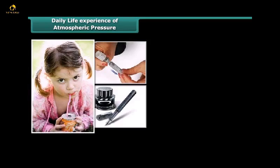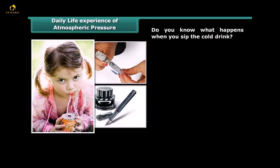Daily life experience of atmospheric pressure. In our day to day activities, we experience various instances of atmospheric pressure. Some common examples are sipping cold drink through a straw, dipping the nozzle of the syringe in the liquid, or filling of ink in fountain pens. Do you know what happens when you sip the cold drink? The air pressure inside the straw is reduced and the air pressure on the surface of the drink pushes the drink up into the straw to reach our mouth.